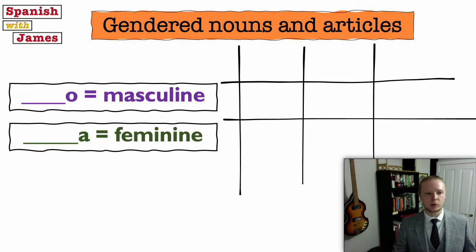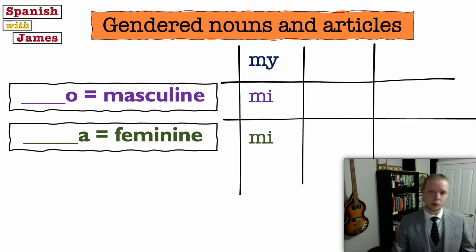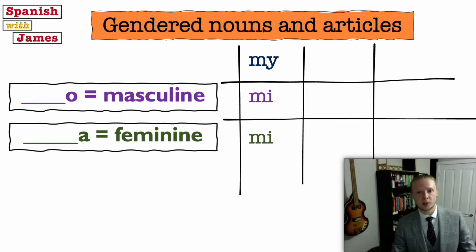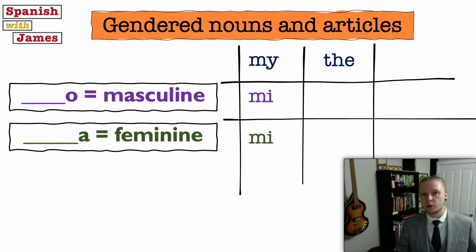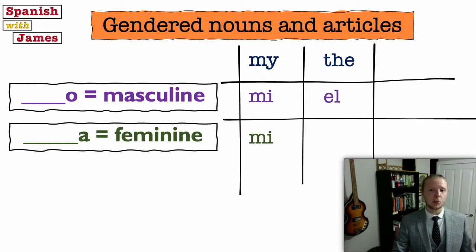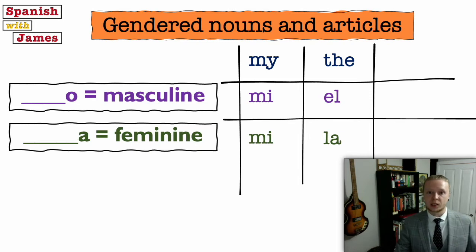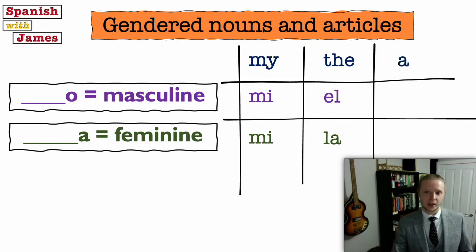If we want to talk about a family member who's male, we might want to use a possessive adjective — words like my, your, his, her. The word for 'my' in Spanish is always the same for singular nouns; it doesn't change for masculine and feminine — it's just mi. If you use the word for 'the', it does change: el for masculine, la for feminine. And the word for 'a' or 'an' is un for masculine and una for feminine.